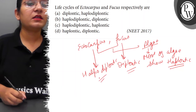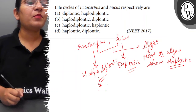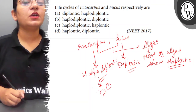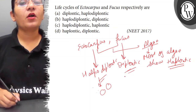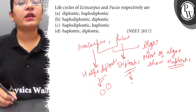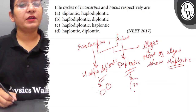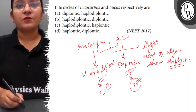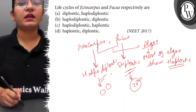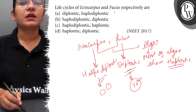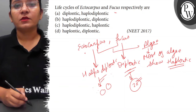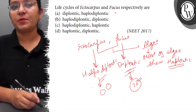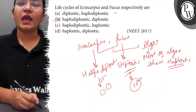In haplodiplontic life cycle, the haploid and diploid phases are both equal — the gametophyte and sporophyte stages are for equal time. And in diplontic life cycle, the main plant body is diploid. So the answer here is: Ectocarpus shows haplodiplontic life cycle and Fucus shows diplontic life cycle — so the option is B, haplodiplontic and diplontic. Thank you, see you later!